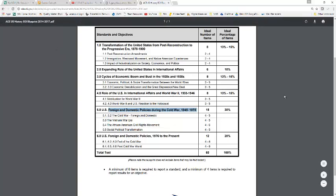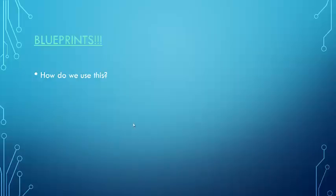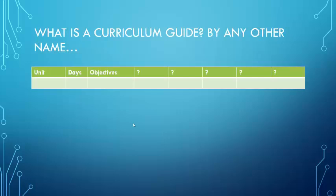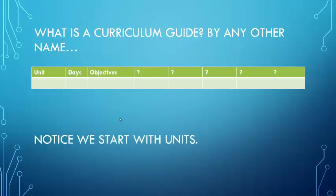Let's get back to the presentation. Here's what you're going to do for your curriculum guide — this is just in Excel. I've labeled it unit, number of days, and objectives. All you're doing for your Friday assignment is identifying the units, the number of days you'll spend on each unit, and the specific objective you're going to cover.